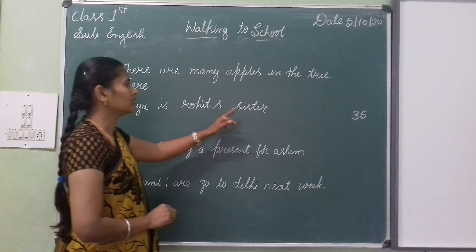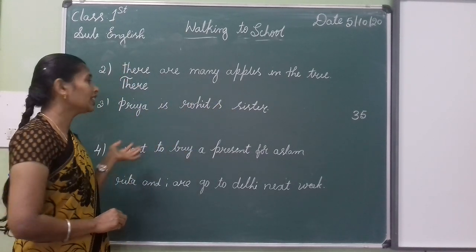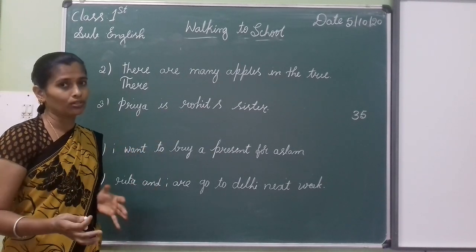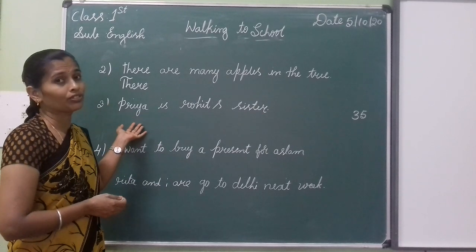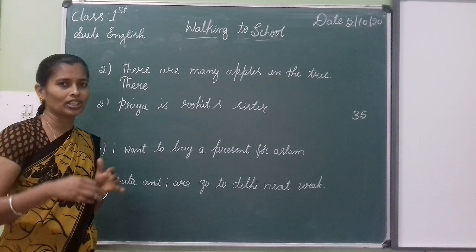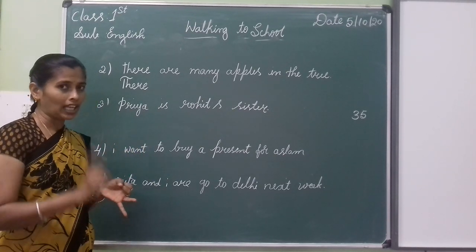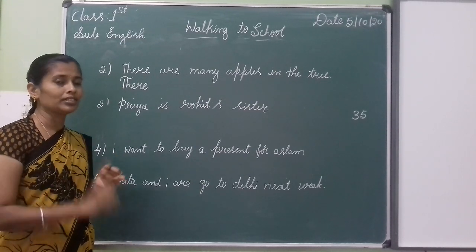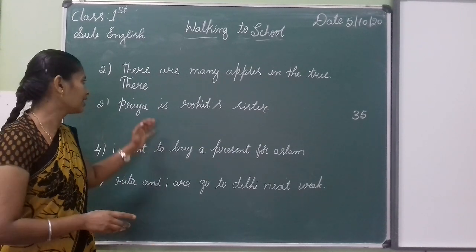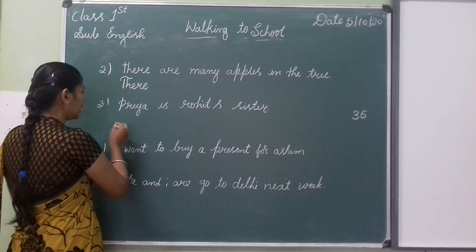Next one: 'Priya is Rohi's sister.' Priya and Rohi are nouns — names of persons. But they are given in small letters. You have to write capital letters for names of persons, names of places, days, and months.